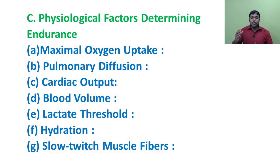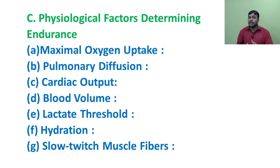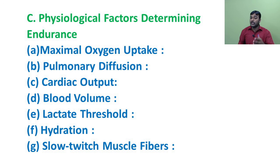In 1996, McArdle, Katch and Katch did a study and found that in untrained people, the lactate threshold occurs at approximately 50 to 60 percent of maximum oxygen uptake volume. However, trained athletes reach the lactate threshold at 75 percent of maximum uptake volume. It was even found that in some world-class endurance runners, it was at 80 to 90 percent of maximum uptake volume.